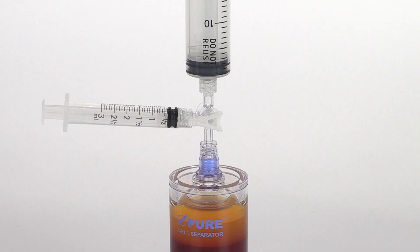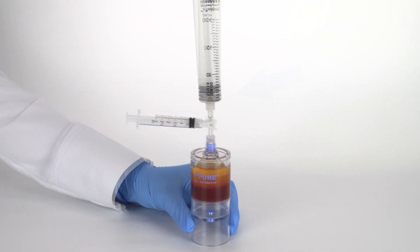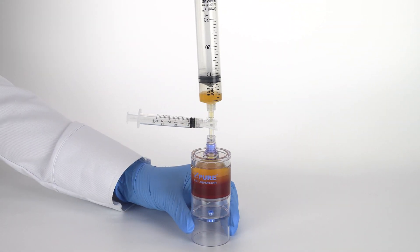After centrifugation, attach the sterile syringe accessory to the needleless port and aspirate the bone marrow plasma suspension.